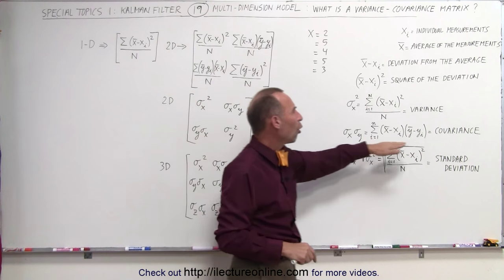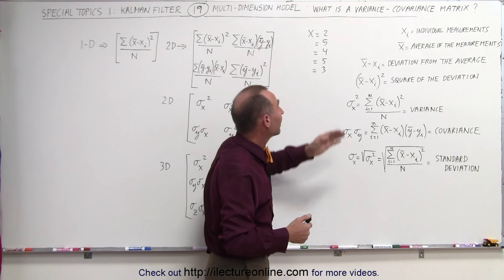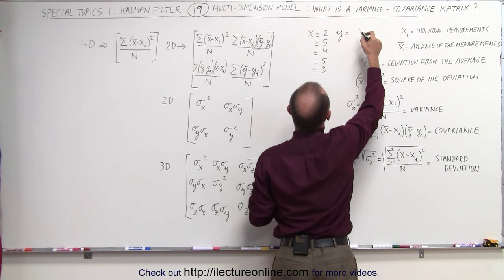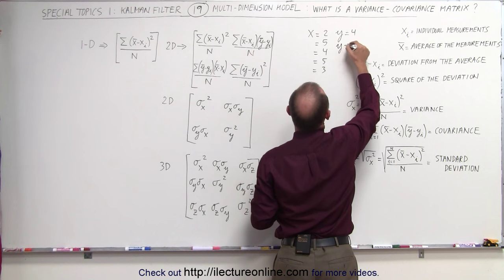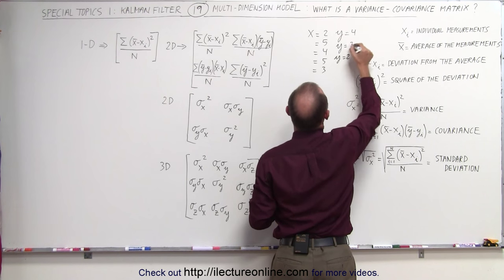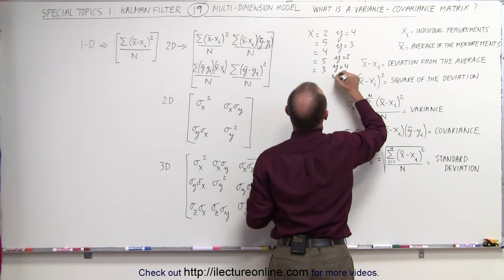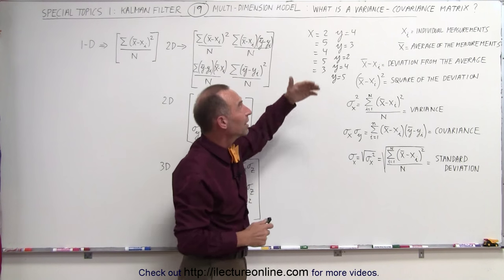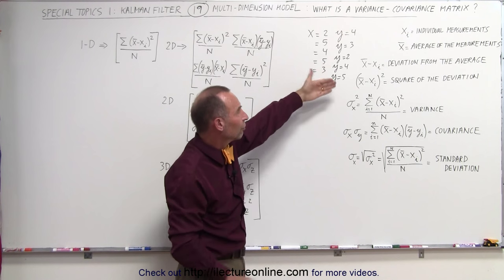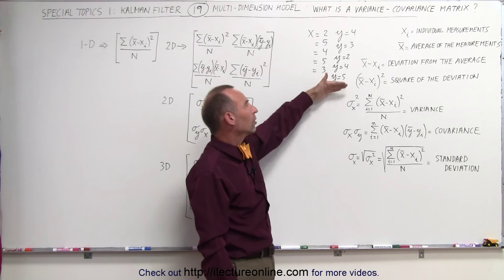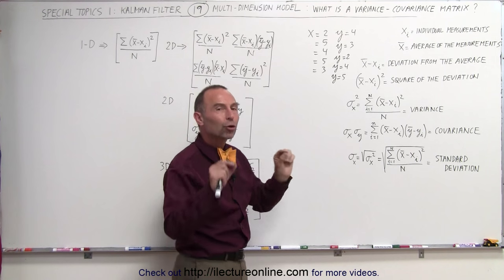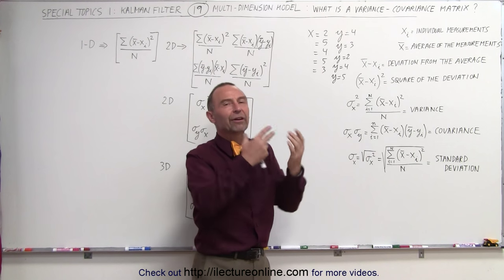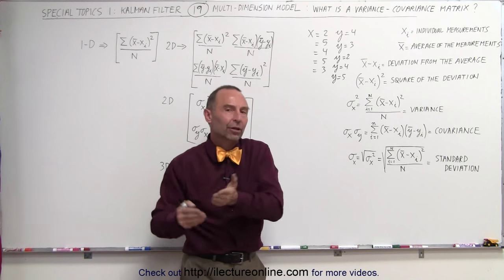Then we have something called the covariance. Let's say we not only take the length of an object, we also measure the width. So y represents the width, and the values would be y equals 4, y equals 3, y equals 2, y equals 4, and y equals 5. We can do the same thing for the y value: find the individual measurements, the average, the deviation from the average, the square of the deviation, and finally the variance. However, the covariance is when we compare the variation of one variable and the variation of the other variable together.